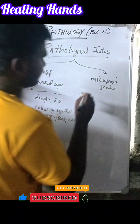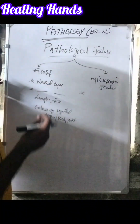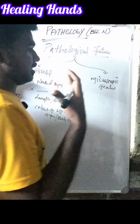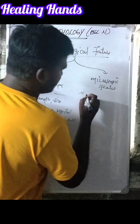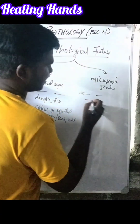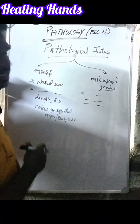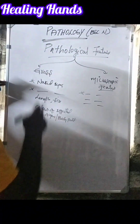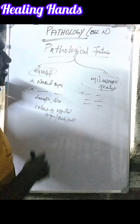Microscopic features means if we take a small piece of the affected organ or body part tissue and view it under a microscope, we write those features under this heading.